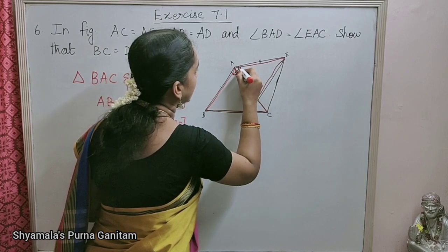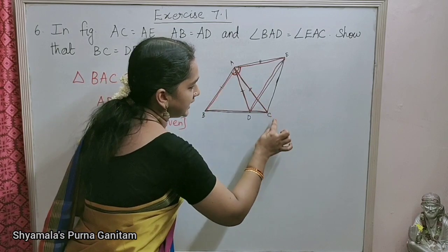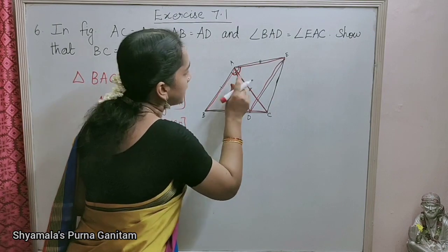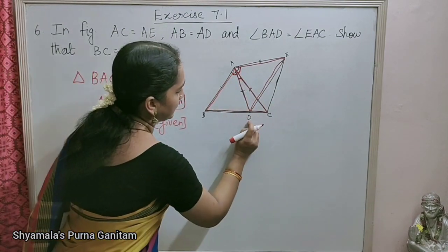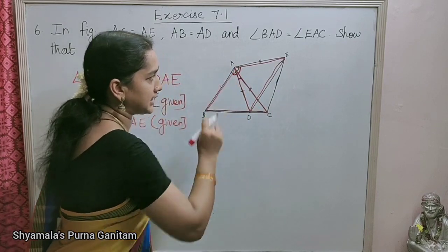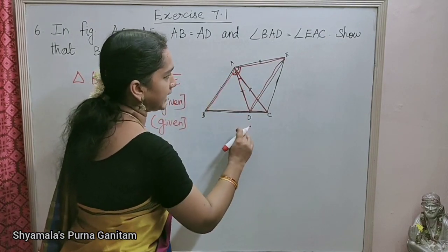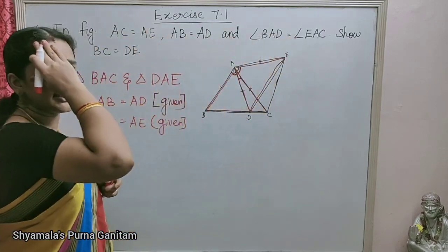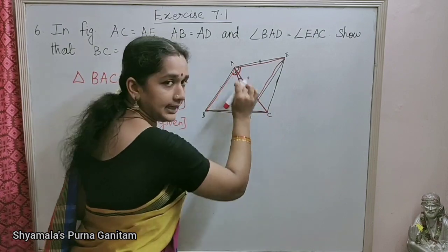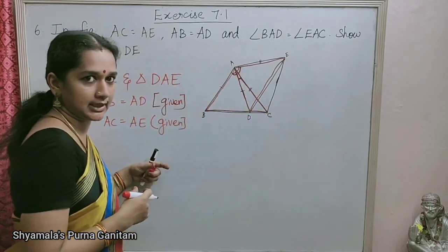This angle and this angle are given as equal. But we have taken triangles BAC and DAE, so this smaller part, angle DAC, is common to both. The question gives us that angle BAD is equal to angle EAC. Now I am adding angle DAC to both sides.